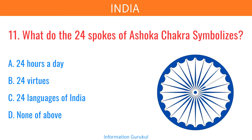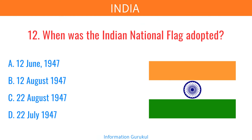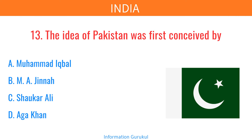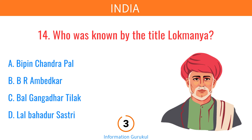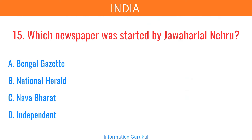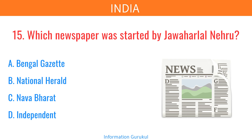What do the 24 spokes of the Ashoka Chakra symbolize? 24 hours a day. When was the Indian national flag adopted? 22nd July 1947. The idea of Pakistan was first conceived by Muhammad Iqbal. Who was known by the title Lok Manya? Bal Gangadhar Tilak. Which newspaper was started by Jawaharlal Nehru? National Herald.